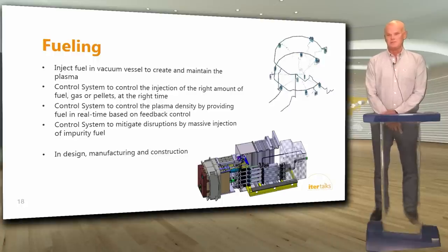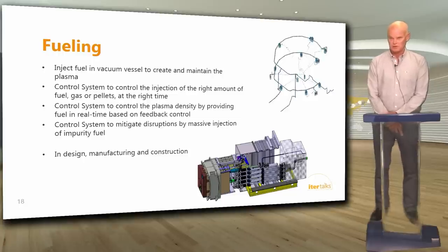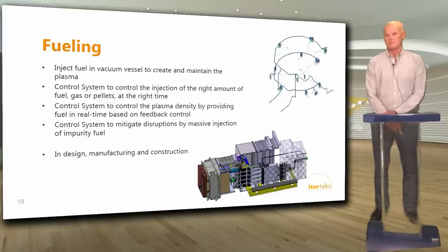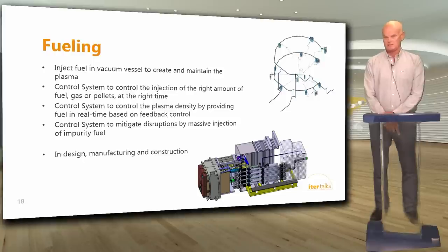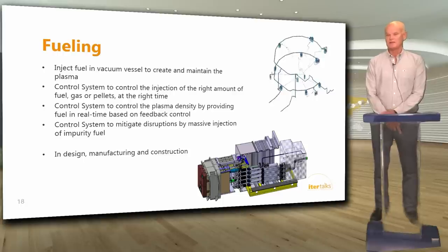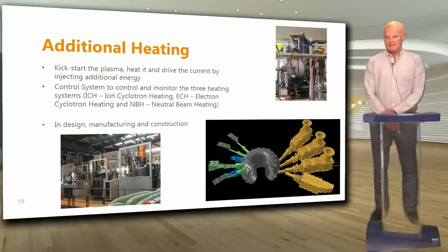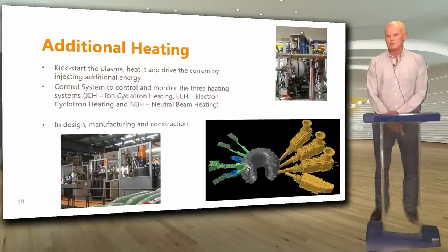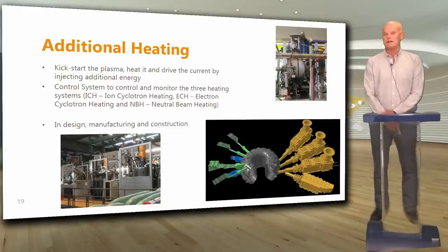We need to inject fuel into the vacuum vessel to create and maintain the plasma. The control system controls injection of the right amount of fuel at the right time, controls plasma density during the plasma pulse via real-time density feedback control, and mitigates disruptions by triggering massive injection of impurity fuel. Then we need additional heating to heat up the plasma more. The control system controls and monitors the three different heating systems: ion cyclotron heating, electron cyclotron heating, and neutral beam injection.